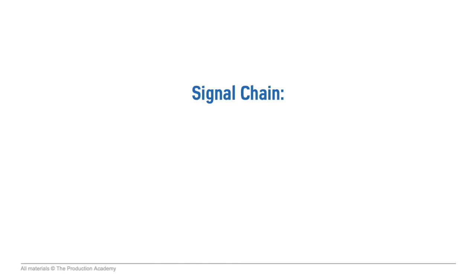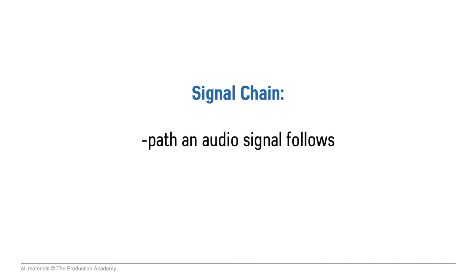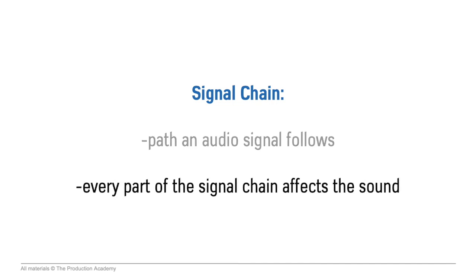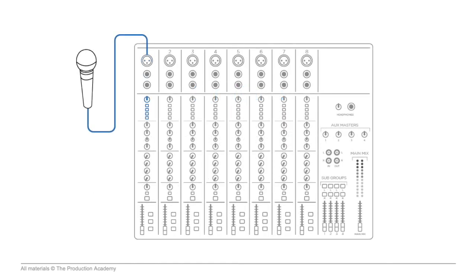To understand the console we need to cover a critical concept in audio — the signal chain. This is the path an audio signal follows, and it's important to know that every part of the signal chain affects the sound. As the signal goes through the console, it first goes through the different sections of the channel strip in order.